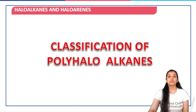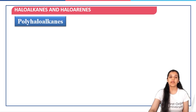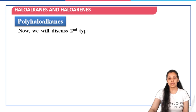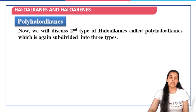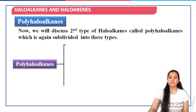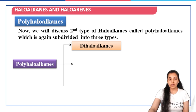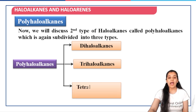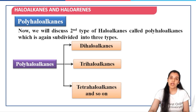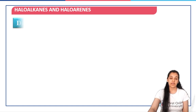Next, we move on to the second classification — polyhalo alkanes. Polyhalo alkanes are further subdivided into dihalo alkanes where we have two halogen atoms, trihalo alkanes where we have three halogen atoms, and tetrahalo alkanes where we have four halogen atoms, and so on. We can go on further classifying.